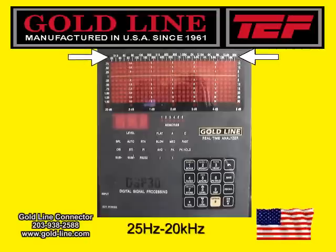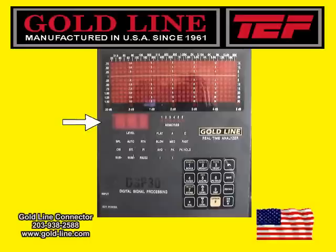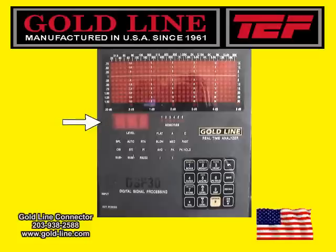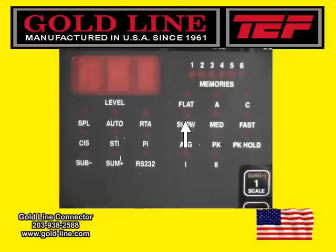The top of the display shows you the 1 third octave ISO center frequencies. The frequencies range from 25 Hz to 20,000 Hz. The smaller LED screen below the main screen displays an accurate sound pressure level. SPL can be read as a reference level or an accurate broadband measurement. Depending on the test requirements, you can measure and display the SPL in flat, A, or C weighting.